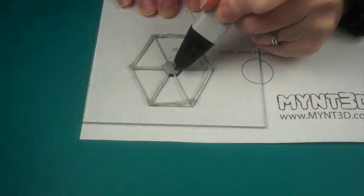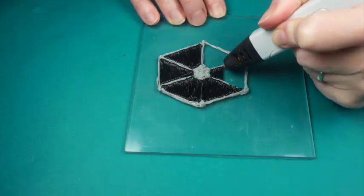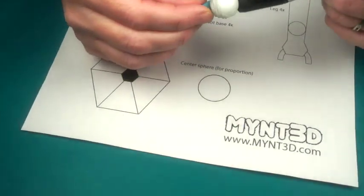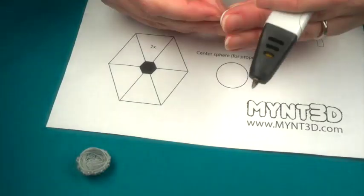Start the TIE fighter by tracing the wings in gray filament and filling them in with black. Place sticky tack on a marble as a way to hold it while winding filament around one half of the sphere. Make a second half and join together.